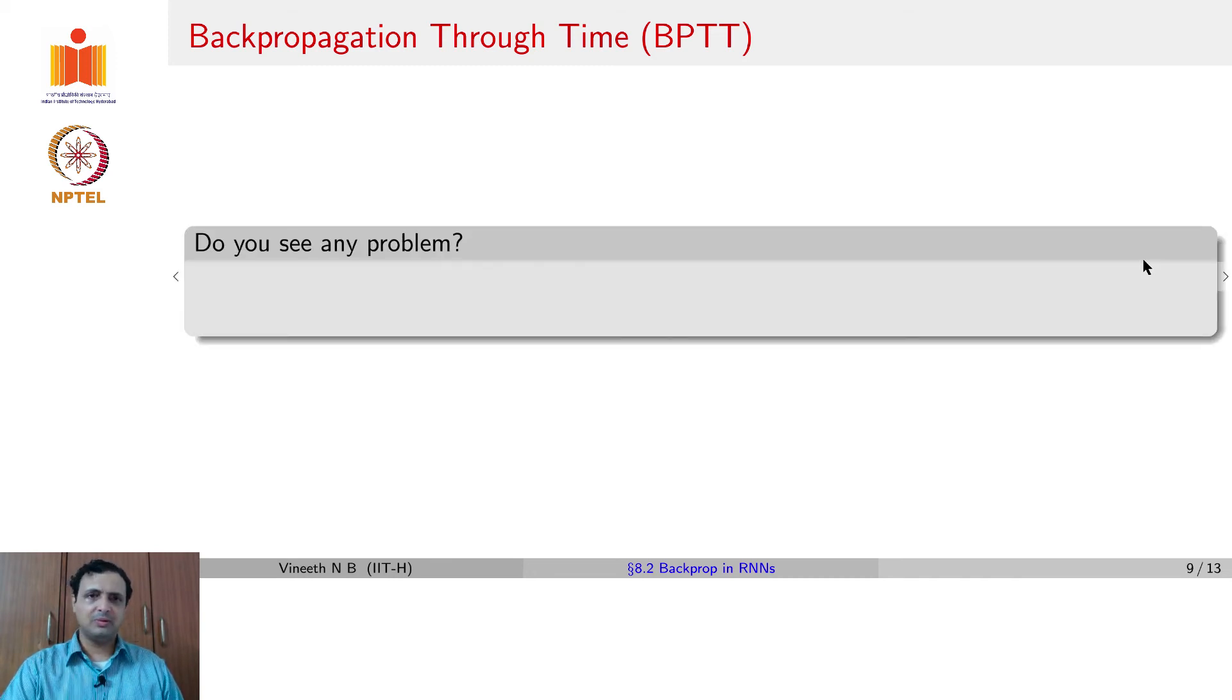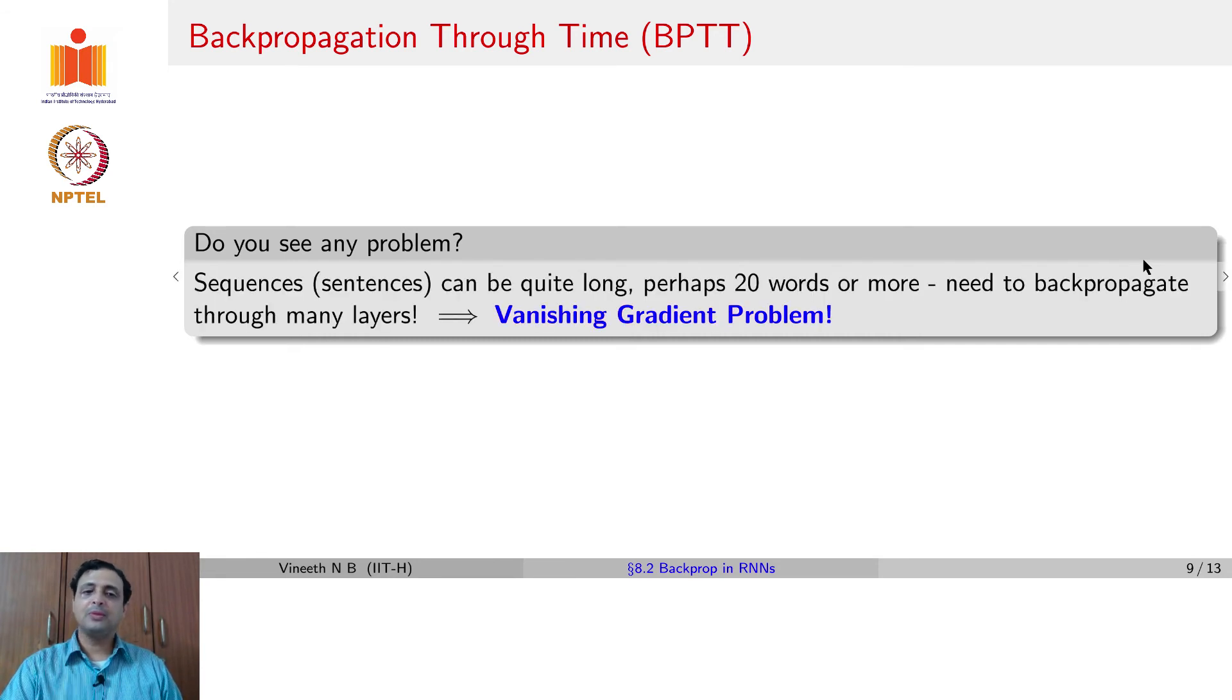Do you see any problem in this particular approach? If you thought carefully, you will realize that RNNs are often used for time series data that can be reasonably long. You could be using it for data that has 20 time steps, 50 time steps, 100 time steps, depending on the nature of the problem that you are dealing with. So when you now backpropagate, you are going to be multiplying the gradients across all of these time steps.